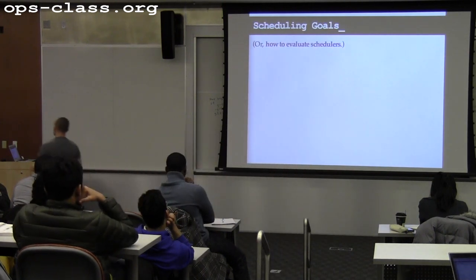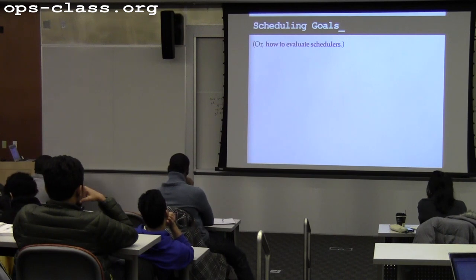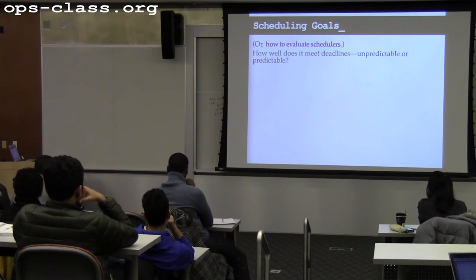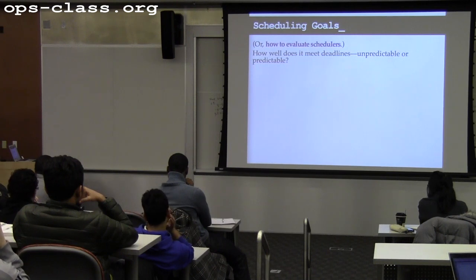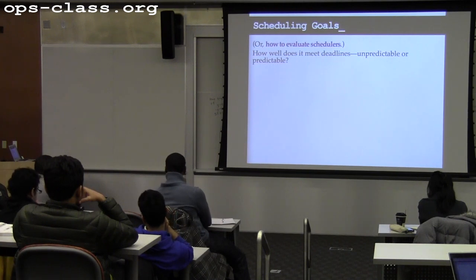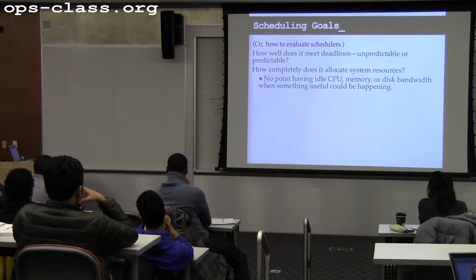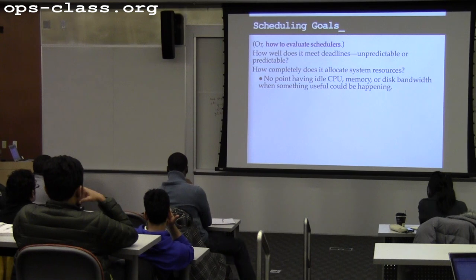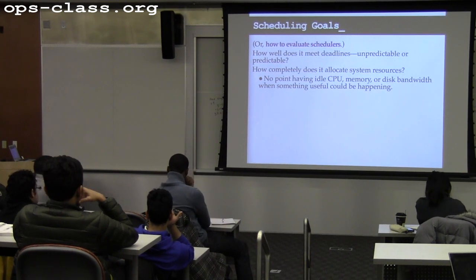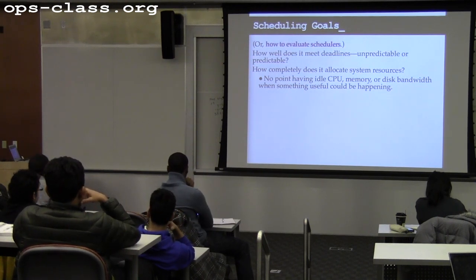Let's talk about how to evaluate schedulers. One way is how well it meets deadlines — how responsive it is, whether those deadlines are predictable deadlines caused by continuous tasks or unpredictable deadlines caused by user interaction. The second thing, in direct conflict with the first, is how efficiently it allocates system resources — there's no point idling parts of the machine that could be in use.